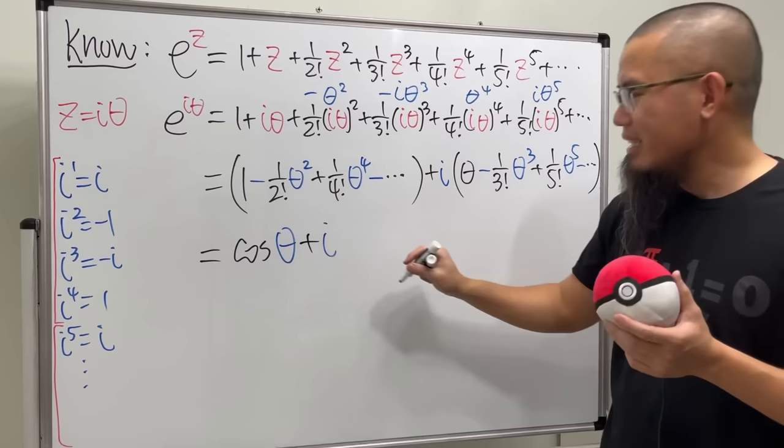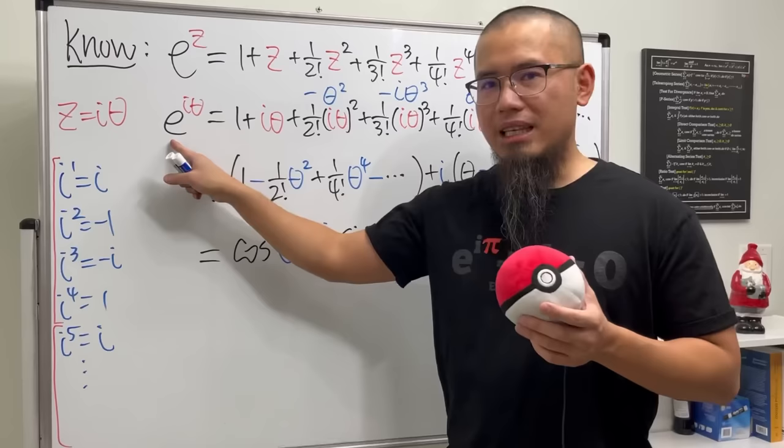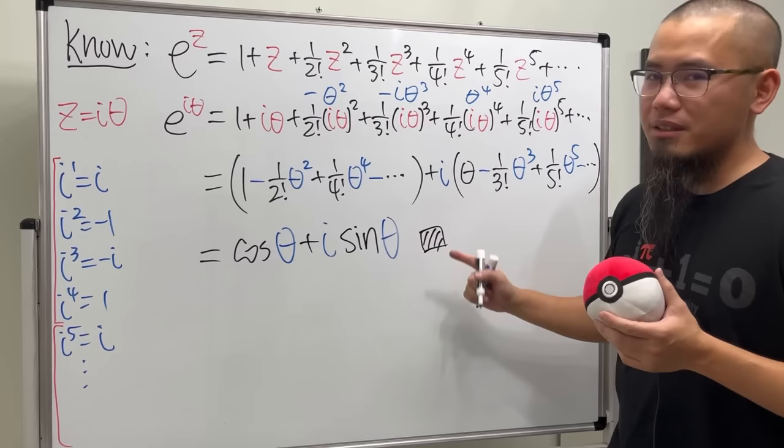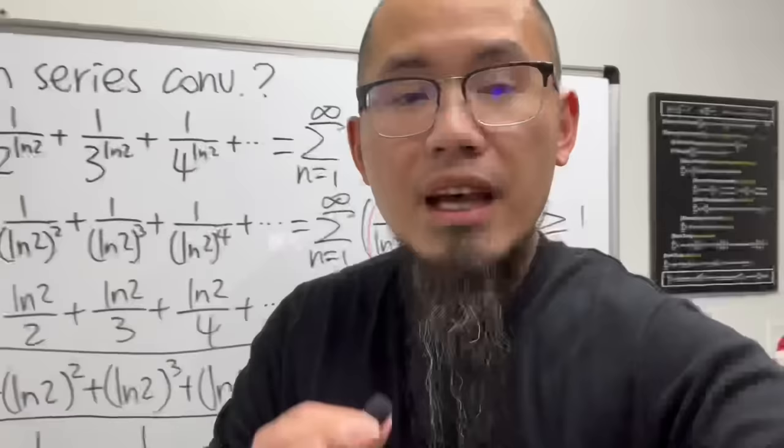So, ladies and gentlemen, e to the i theta. Believe it or not, you get cosine theta plus i sine theta. This is super, super cool. So, let me put a box and shade it in. This is just a style of how you are telling people that you are done with the proof.